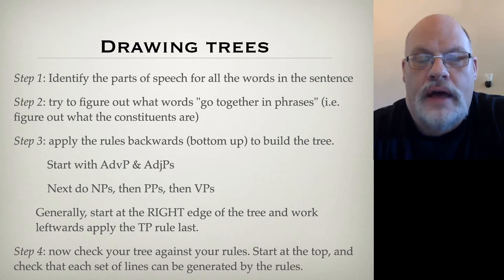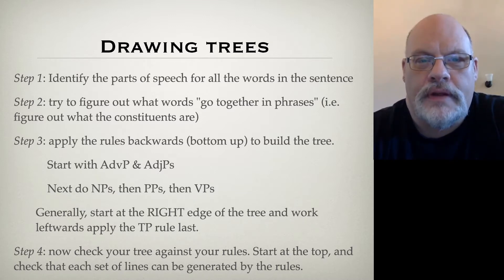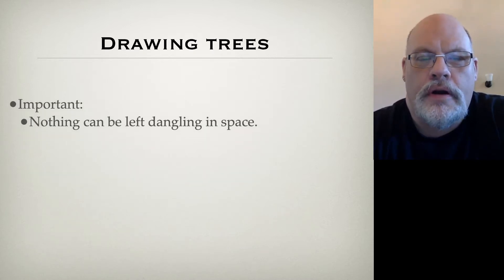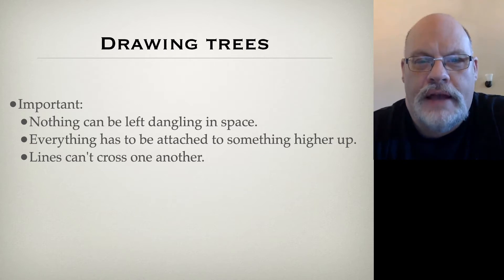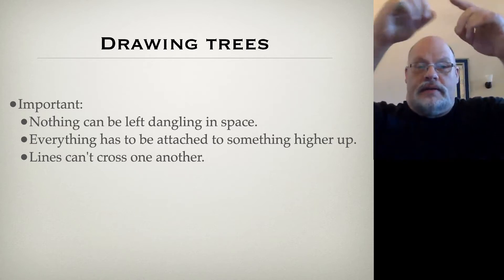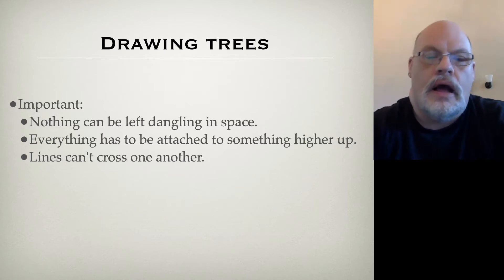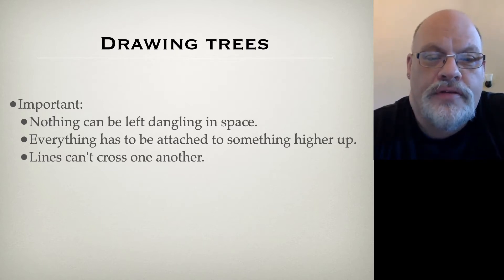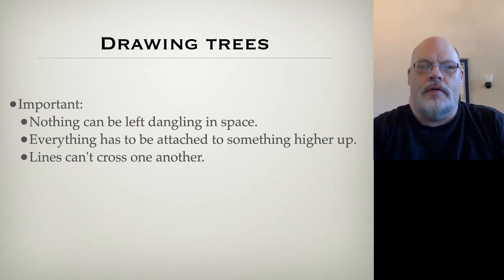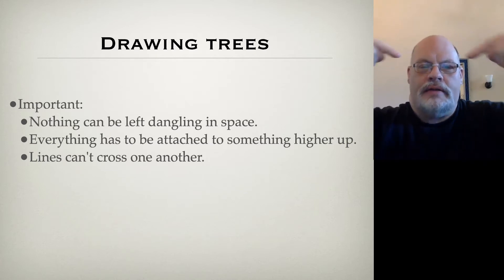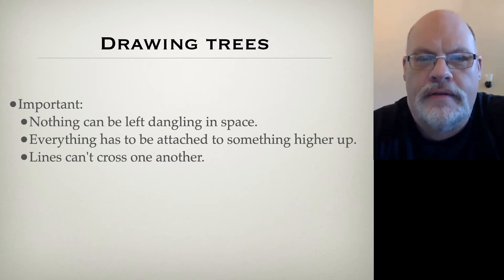So let us do some examples, and then you'll have the opportunity to practice on your own from examples in the textbook. There are a few things that should be obvious, but I'll say them anyway. First, nothing can be left dangling in space — everything has to be connected to something higher up in the tree. Also, you can never cross lines. If you're tempted to draw a structure where your lines cross, you've done something wrong.